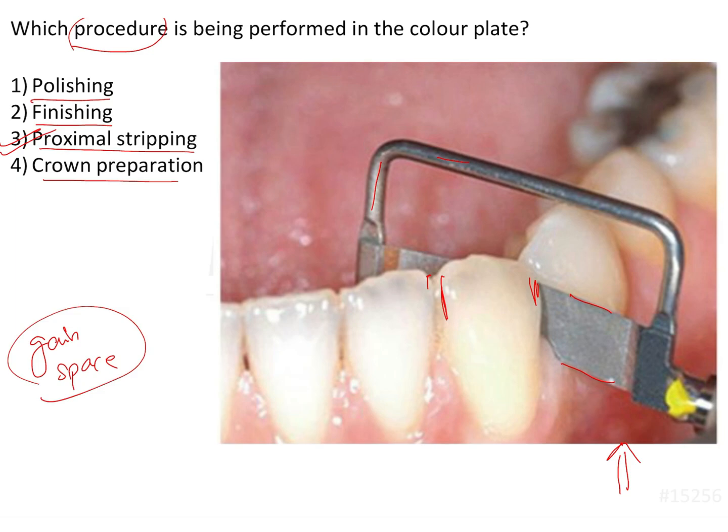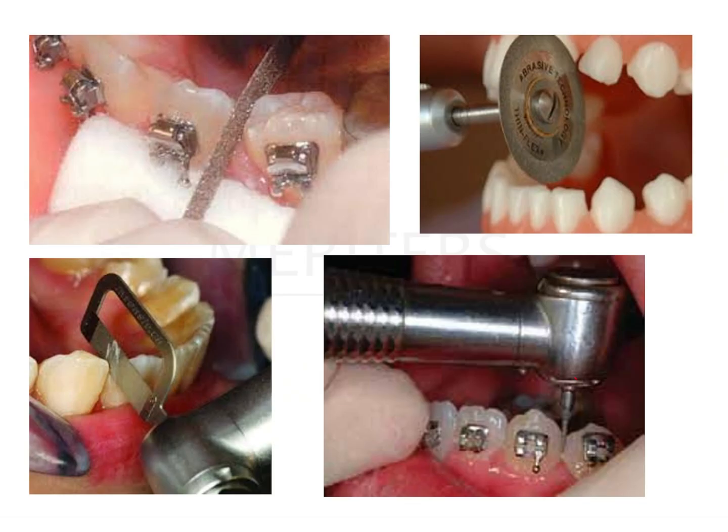This can be done in various ways. Here in this image there is a saw frame which has a diamond strip. The diamond strip can be handheld and manually moved between the interproximal areas in order to remove the enamel, or it can be used with the help of diamond discs which can be mounted on an aerotor or a micromotor. Burrs can also be used to carry out the same process.